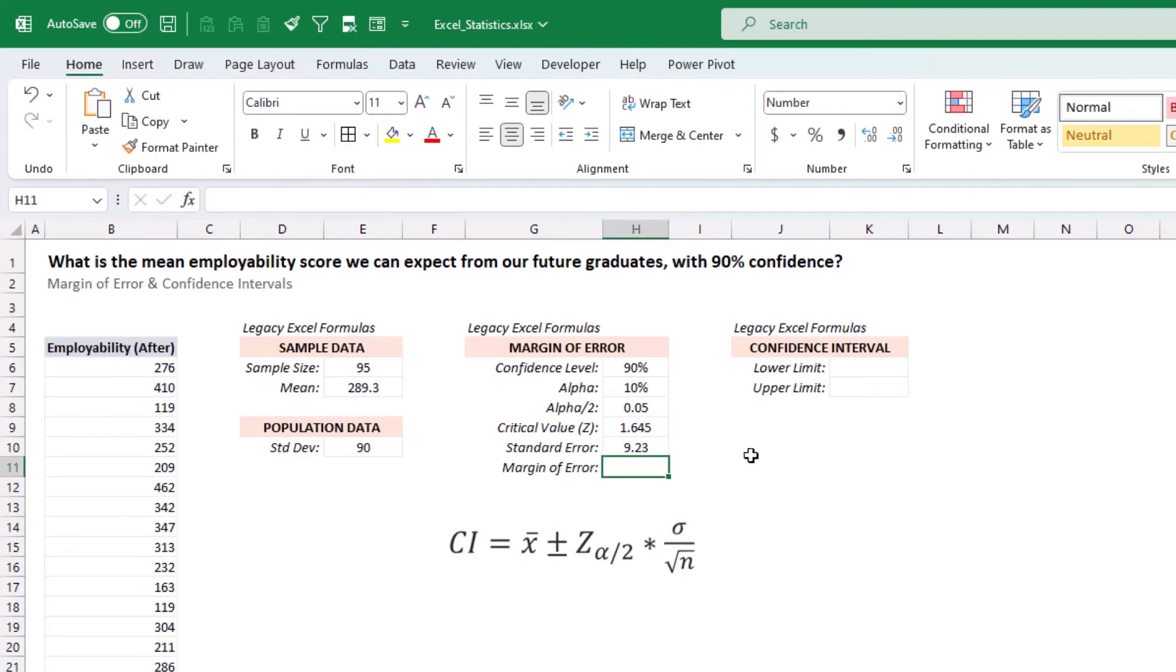And to get the margin of error, we just multiply the standard deviation of our sample means by the number of standard deviations that will allow our sample mean to deviate from the population mean. Press enter.